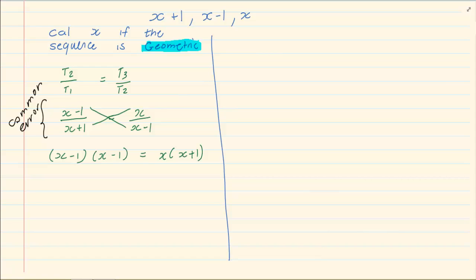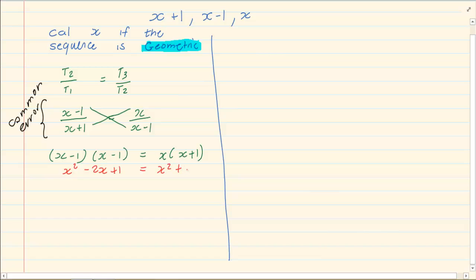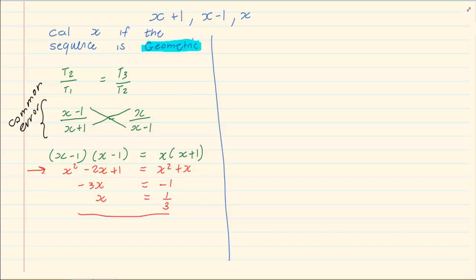Once you have this, we are going to solve for x using normal trinomials. So we have x squared minus 2x plus 1 is equal to x squared plus x. If you make everything equal to zero, we have minus 3x equals minus 1, so x equals 1 over 3. If you are not familiar with this step, go to our previous videos and review it.